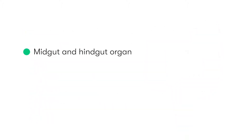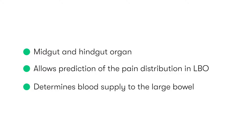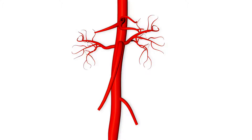Embryologically, the large bowel is derived from the midgut and the hindgut. This is important as it allows us to understand the characteristic pattern of pain that patients with large bowel obstruction will develop, as well as the blood supply to the large bowel. The arterial supply to the large intestine arises from two anterior branches of the abdominal aorta.